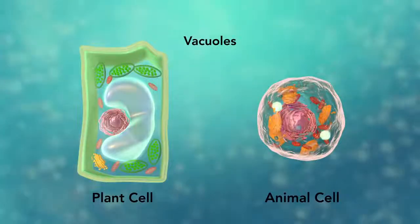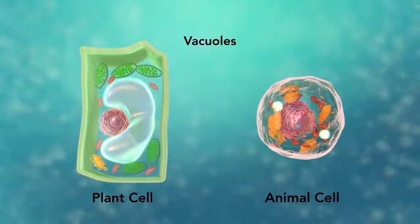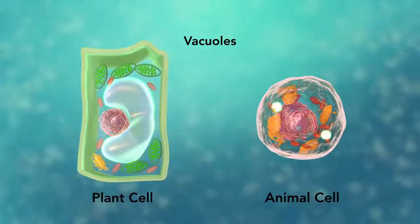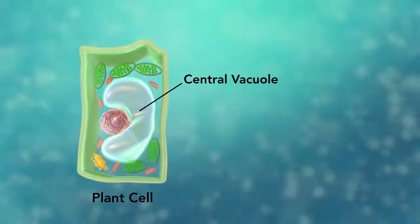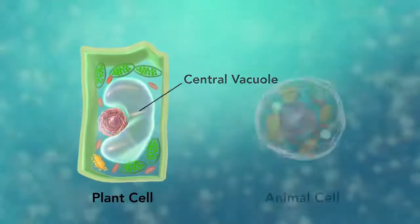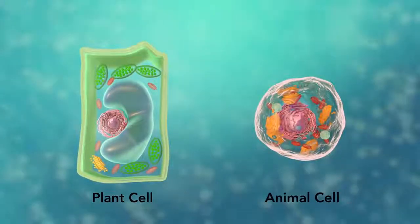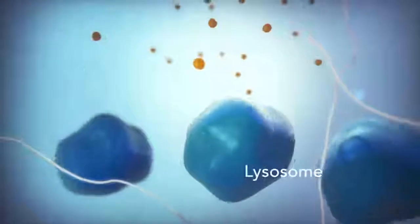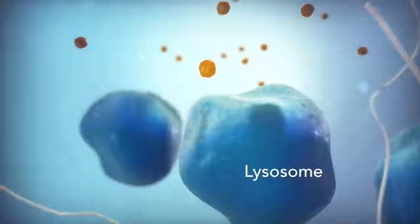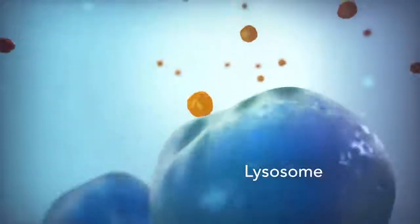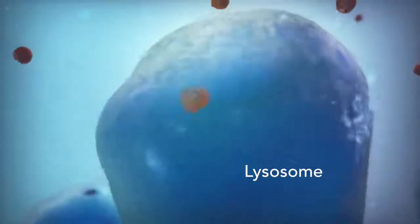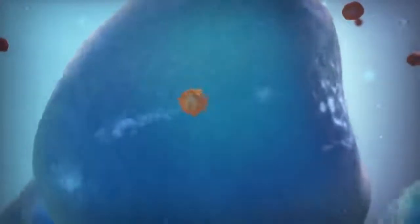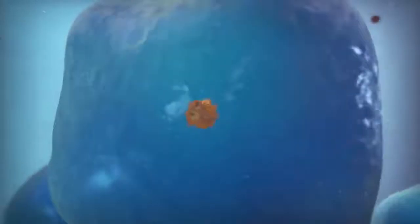Vacuoles are sac-like structures that store different materials. Here, in this plant cell, the central vacuole stores water. Going back to the animal cell, you will see an organelle called a lysosome. Lysosomes are the garbage collectors that take in damaged or worn-out cell parts. They are filled with enzymes that break down this cellular debris.